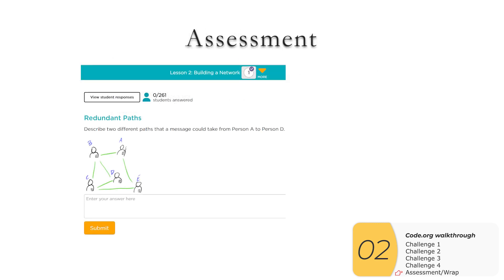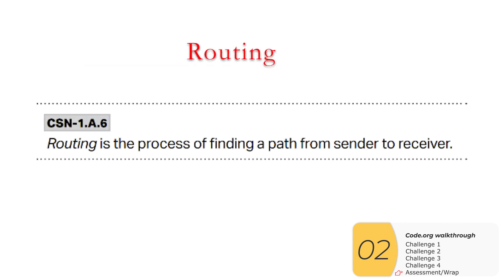Code.org will then have an assessment where they want us to describe two different paths that a message could take going from A to D. So here I could go from A to B to D, A to B to C to D, A to E to C to D, and A to E to C to B to D, which is probably going to be the worst one. What we just did here is another vocab word. It's called routing. And that's the process of finding a path from sender to receiver.